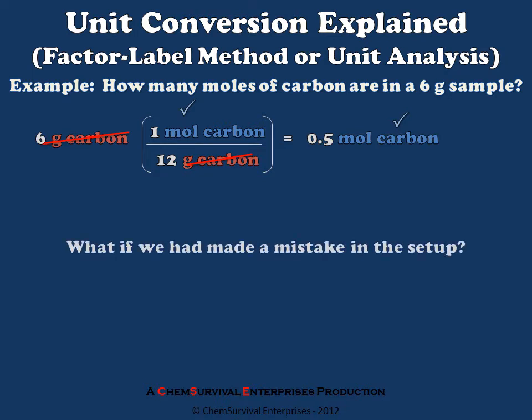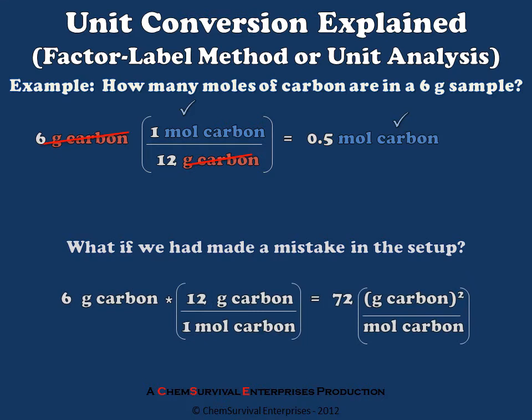Let's say for example we had made a mistake in the setup and instead of multiplying by 1 mole over 12 grams, we multiply by 12 grams over 1 mole. In doing so we would generate a unit which doesn't make any sense: grams carbon times grams carbon divided by moles carbon. This is equal to grams carbon squared per moles of carbon, a unit that we did not anticipate. And because of this we know that this is not the correct setup. So using the factor label method gives us a simple way of internally checking our calculation to be sure that we get the correct answer every time.